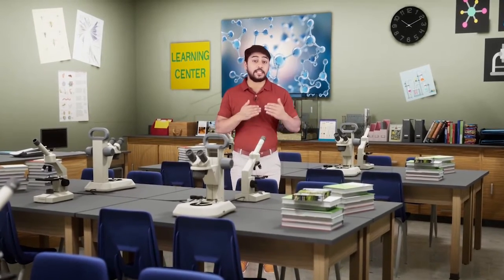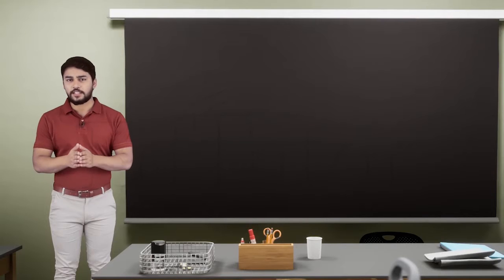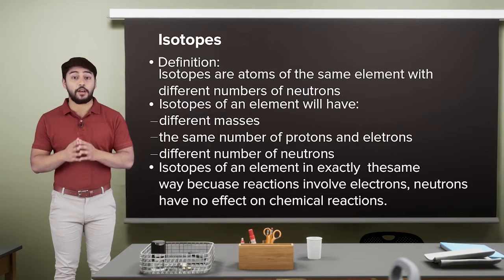Later, after plenty of research, it was found that atoms of an element can possess the same atomic number but different masses. Such atoms of an element are called isotopes.